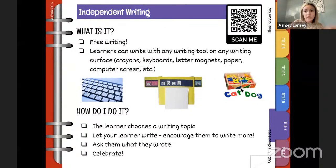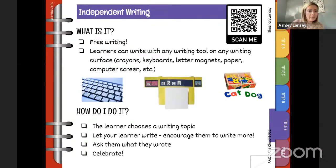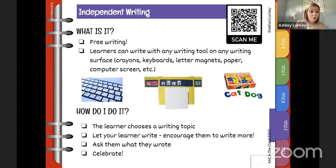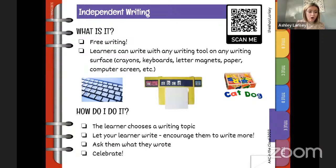Moving on to independent writing. I think this is the one people have the hardest time wrapping their heads around, but it's one of the most important. It's free writing. The most important thing to think about here is that a learner has access to the full alphabet — they're writing with letters — and that they have something to write on, whether a computer screen or even letter magnets on the refrigerator.